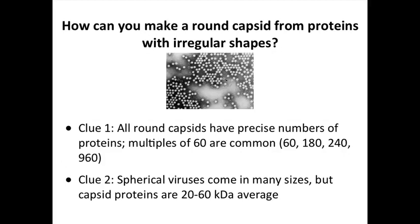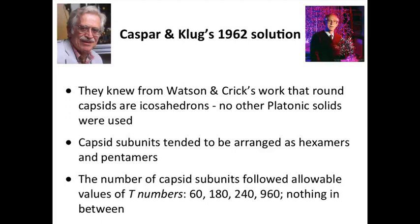And clue number two: the spherical viruses could be very small, like polio, 30 nanometers in diameter, or they could be very big. Yet the capsid proteins are always roughly 20 to 60,000 Daltons in molecular weight. So virus capsids are made of fixed multiples of 60, and the capsid proteins never get too big. So this gave a lot of clues about how you would build these round viruses.